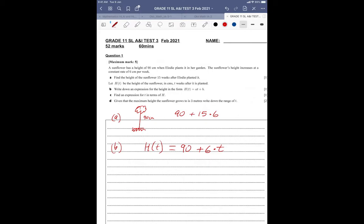And then C, find the expression for T in terms of H. So when we have function notation, to rearrange, it's sometimes easier just to write down the H like that. And that's OK, right? We know that H is the height of the sunflower. So it's OK to put H. And then just rearrange.